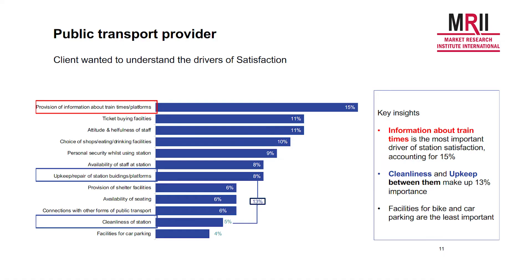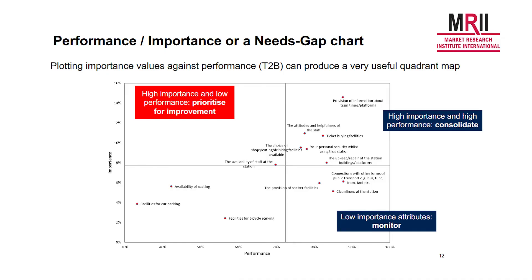We can also use that importance rating alongside other information within the questionnaire. If we look at performance on each of these items against importance, we can see what we call a quad chart — a quadrant chart — which allows us to identify where the company needs to focus its attention. In the bottom right, we have elements with low importance that are performing well, so we don't need to worry too much about these. Top right, attributes are important and performing really well — we just need to consolidate these. Over here is the hotspot: elements which are important but not performing very well, giving the client a clear steer on where they should focus.